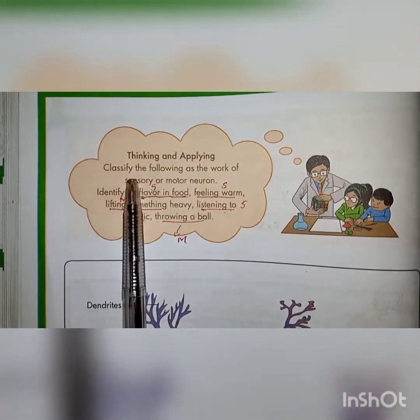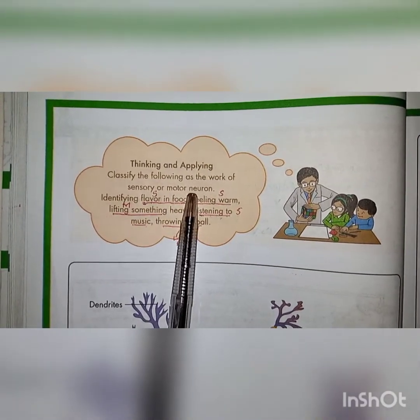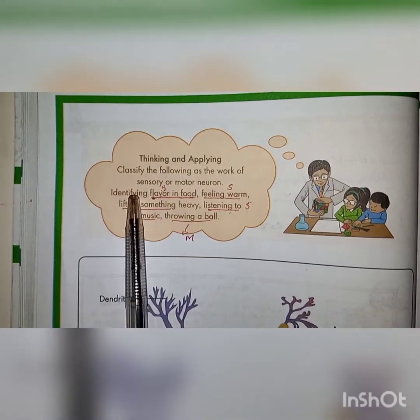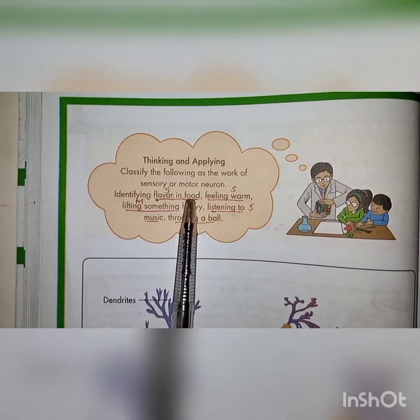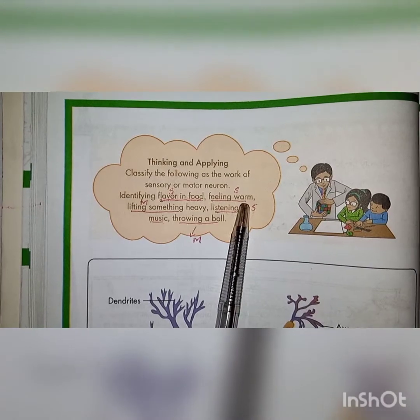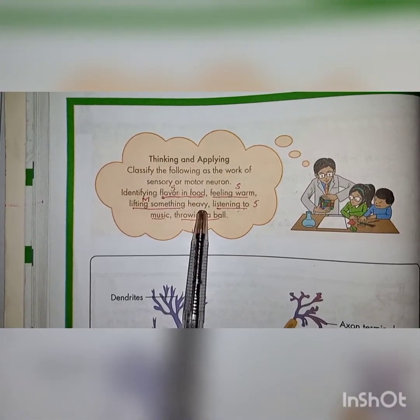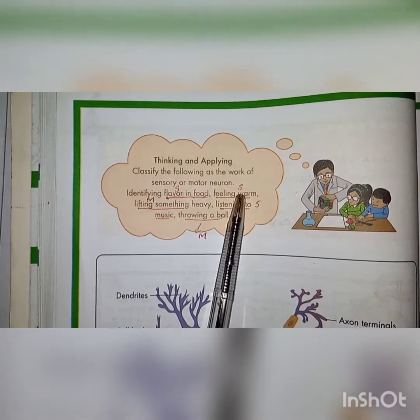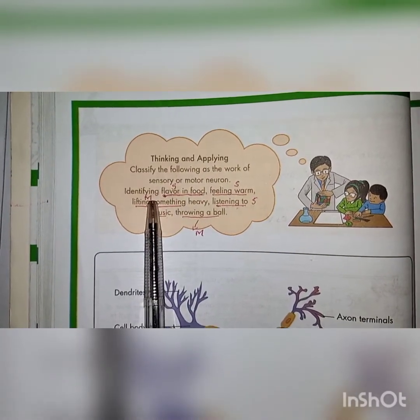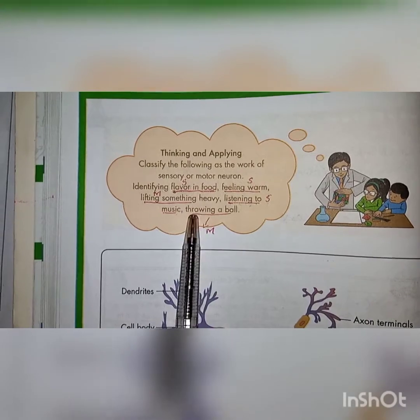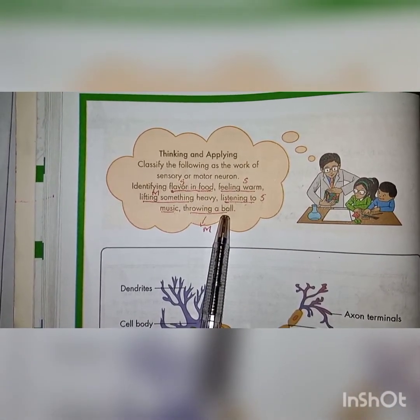Thinking and applying: Classify the following as the work of sensory or motor neurons. Identifying flavor in food — this is the work of a sense organ, so sensory neuron (S). Feeling warm — also a sense organ, sensory neuron (S). Lifting something heavy — this is motor neuron (M), because the message comes from the brain. Listening to music — sensory neuron (S). Throwing a ball — motor neuron (M), because you throw when the message comes from the brain.